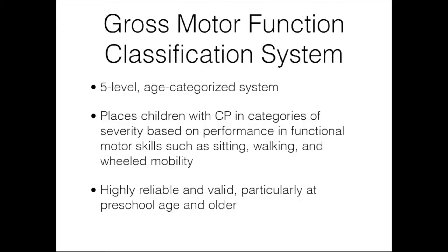A more contemporary way to classify cerebral palsy is by using the Gross Motor Function Classification System, or GMFCS. This is different from the gross motor function measure — it's not a standardized test but a classification system for children with cerebral palsy. It has five levels, and children are categorized by level and their age, placing them in categories of severity based on performance and functional motor skills such as sitting, walking, and wheeled mobility.